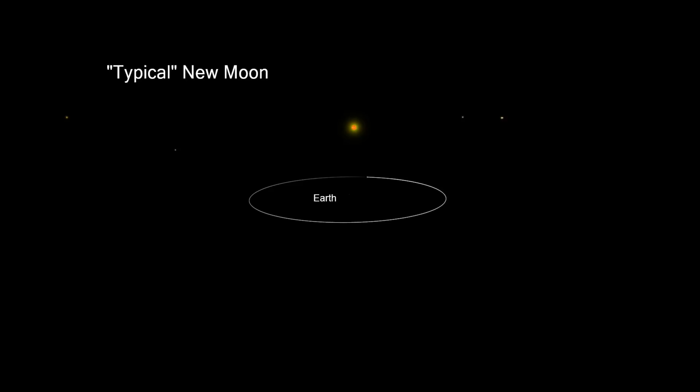Now let's consider what happens when the moon is in the new moon position between the earth and sun. Because of the tilted orbit, the moon usually passes above or below the sun from earth's point of view.